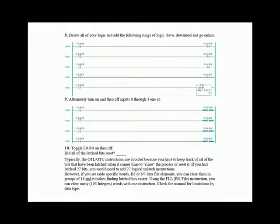The last thing we had you do in this section was the CLEAR instruction, which should be very clear to you — it just clears the destination. To show a possible application, we had you put in a bunch of latched output instructions and alternately turn on inputs 0 through 3 one at a time, which latches up the bits. Remember from an earlier lab that latch and unlatch do not have a false execution. So the latch instruction sets the bit, but when the rung goes false, the latch instruction has no false execution and doesn't do anything — if the last thing you did was set the bit to 1, it's still 1.